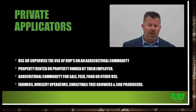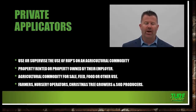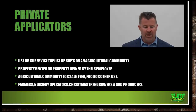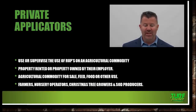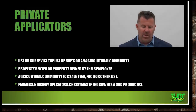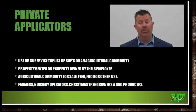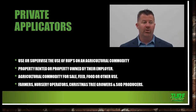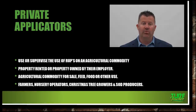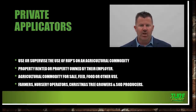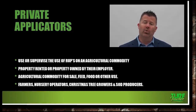Private applicators are going to use or supervise the use of a restricted use pesticide on an agricultural commodity. An agricultural commodity can be any type of agricultural crop produced for sale, whether you're producing seed or any type of food. They can spray or apply these pesticides on their property or property that is rented by their employer. You can apply restricted use pesticides on rented property if you're supervised by someone who is certified or if you're certified yourself.